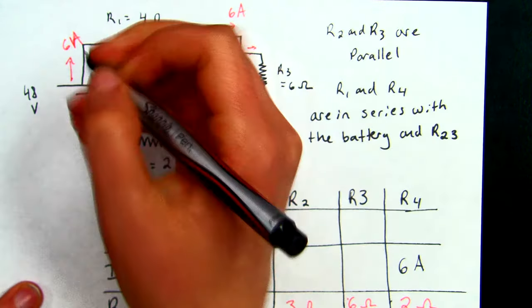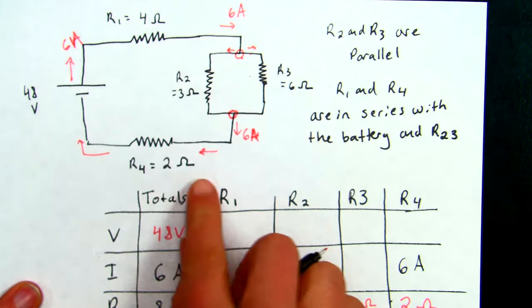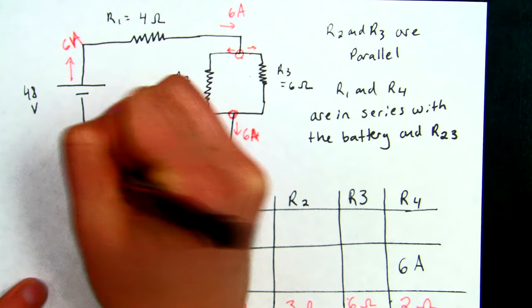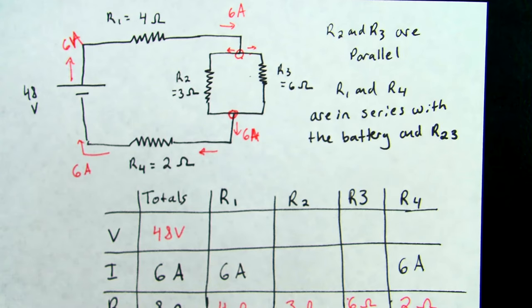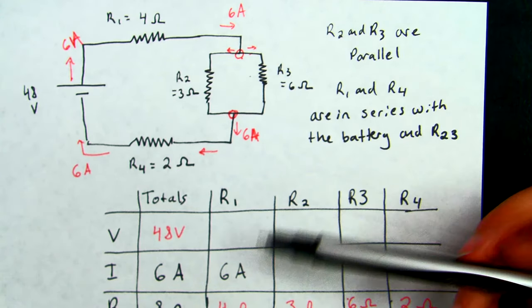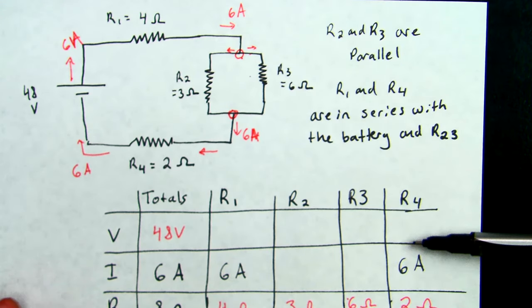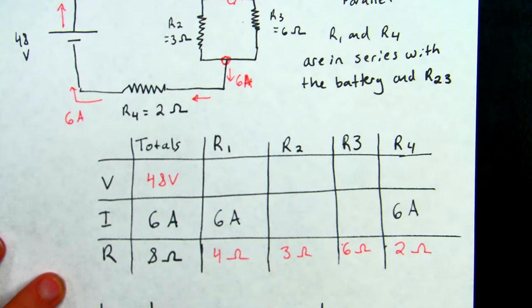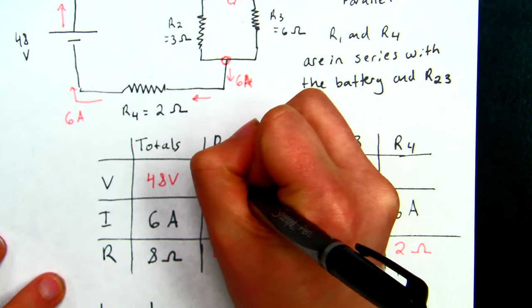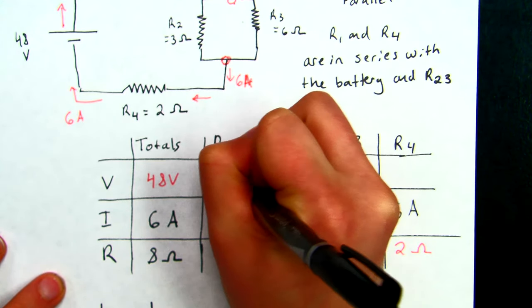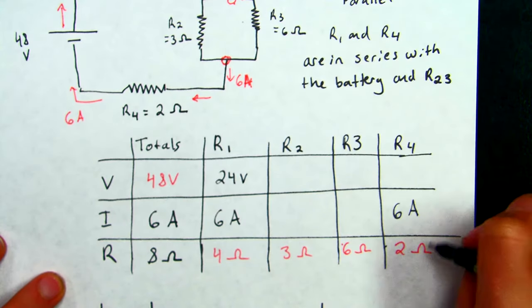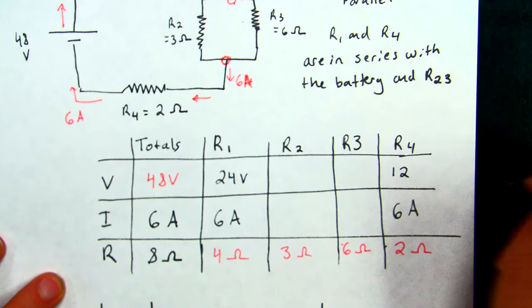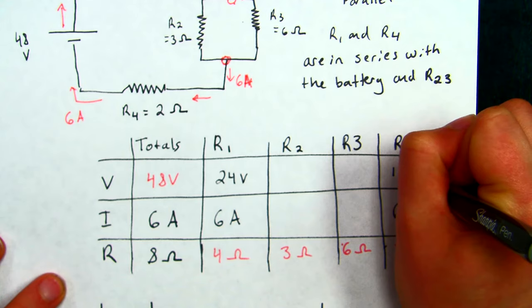And then finally, after we pass through R4, our 6 amp journey continues. Once again, we see that we can go up on our circuit in two places to fill out our voltages. And so we have 6 times 4, we have 24 volts here, and 2 times 6, and that is 12 volts.